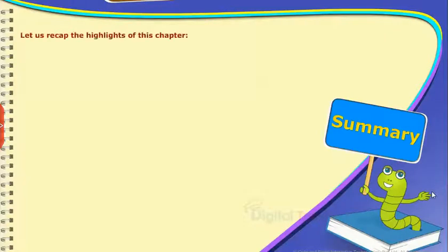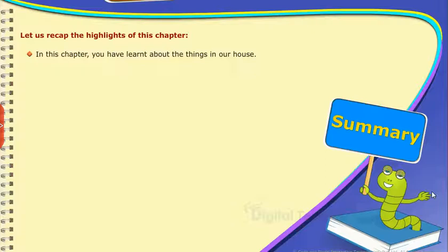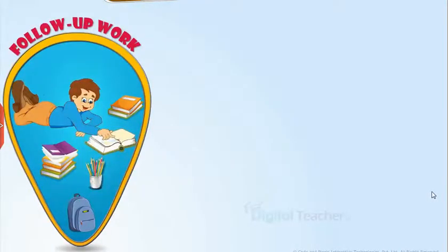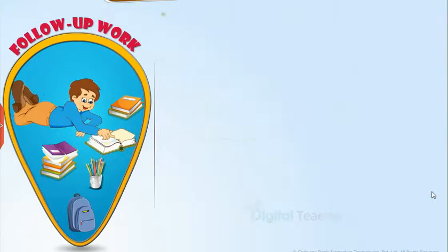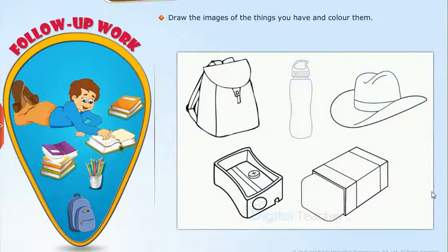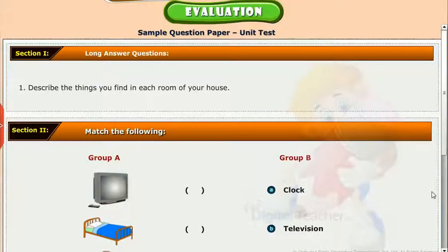Summary: Let us recap the highlights of this chapter. In this chapter, you have learnt about the things in our house. Let's take up the following activity: Name the things in your house which work with the help of electricity. Draw the images of the things you have and colour them. Test your understanding of the lesson by taking the mock unit test.